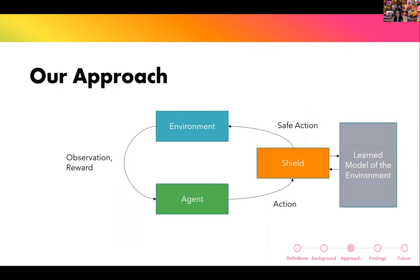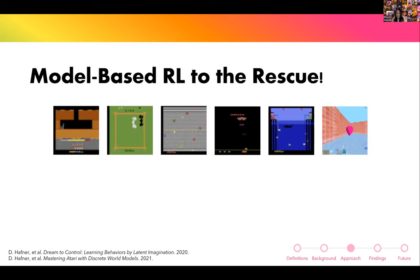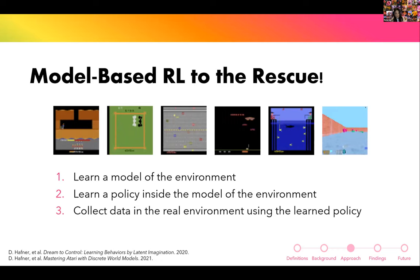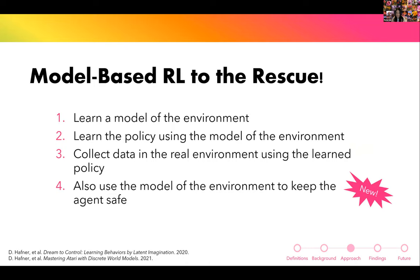Our approach solves both of these problems by using a learned model of the environment. How do we learn a model? With model-based reinforcement learning. The Dreamer approach — a major paper in the world model literature — proposes: first, learn a model of the environment; second, learn the policy inside the model; third, use that policy to collect data in the real environment; and repeat until convergence. In our approach, we also use the model of the environment to keep the agent safe — that is the crux of our work.